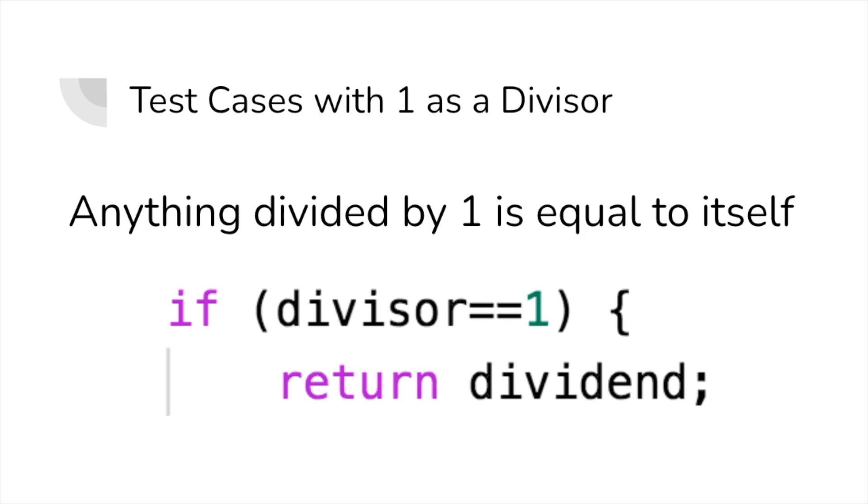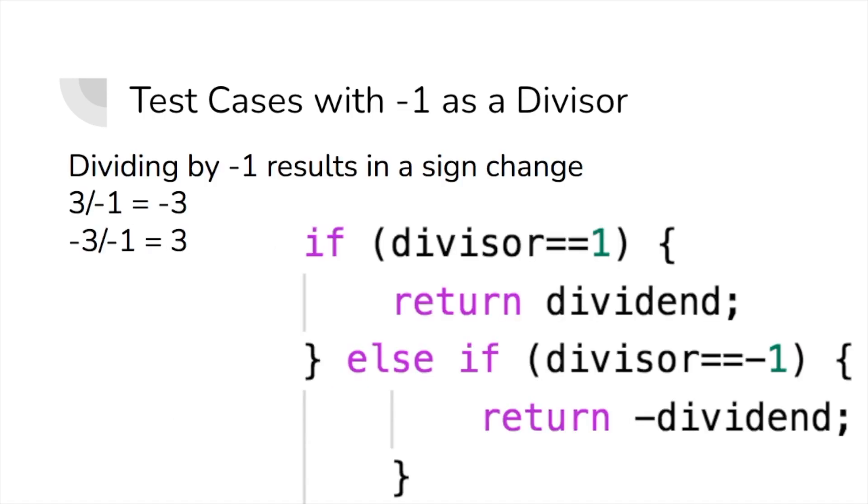After that, we're going to be getting into test cases involving 1 as our divisor. First up, if 1 is the divisor, we know that anything divided by 1 is going to be itself, so we can just return the dividend. Next, if our divisor is negative 1, we can return the negated version of the quotient, since anything divided by negative 1 will have its sign flipped. Keep in mind, I'm not multiplying by negative 1, which breaks the rules. I'm directly negating the value.